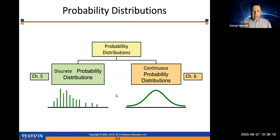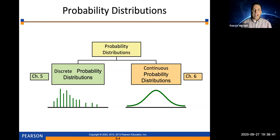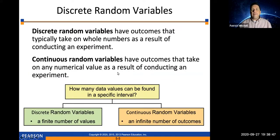If you were to graph the probability distributions, what you see on the left is actually a histogram. The probability distribution for a discrete variable can be graphed using a histogram. A continuous probability distribution has to be graphed with a curve — we'll talk about that starting in the next chapter. Discrete random variables have outcomes that typically take on whole numbers, whereas continuous random variables have outcomes that take on any numerical value.